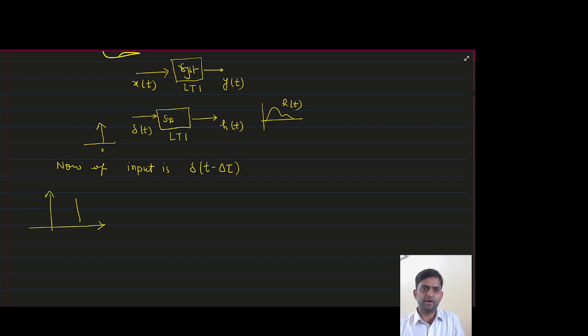Then output of the system will also get delayed. So output will be h(t - delta tau). Similarly if I have a plot of this system, that will be also delayed by delta tau time.